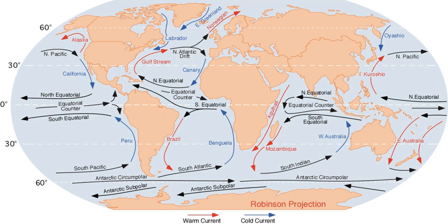Deep ocean basins generally have a non-symmetric surface current, in that the eastern equatorward flowing branch is broad and diffuse whereas the western poleward flowing branch is very narrow. These western boundary currents, of which the Gulf Stream is an example, are a consequence of the rotation of the Earth.